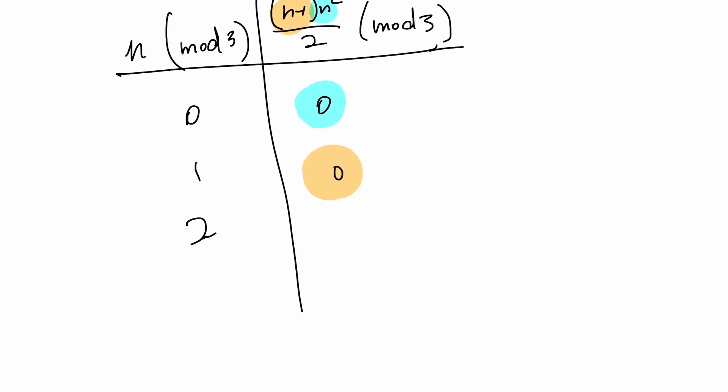Now for 2 mod 3, we have 1 times 2 squared. Notice that because we have mod 3, we need to be careful. Since 2 and 3 are coprime, or relatively prime, we can do the division directly. This gives us 2 mod 3.